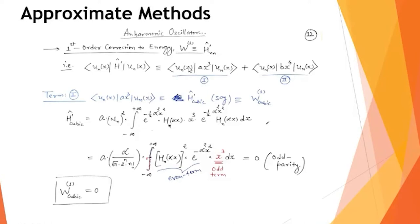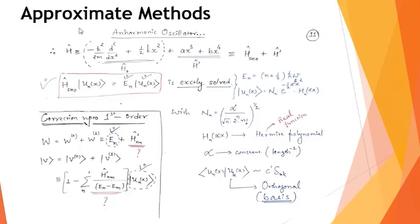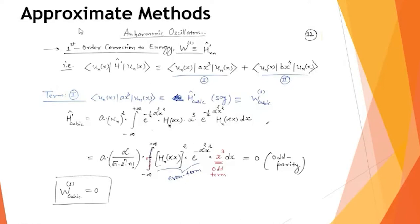The expression for W₁ is ⟨u_n(x)|H′|u_n(x)⟩, where H′ = ax³ + bx⁴. Splitting into two terms, we get one contribution from ax³ and another from bx⁴. We solve them separately: first the cubic term, then the quartic term.